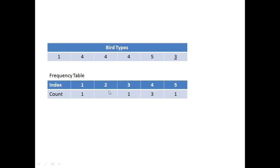Bird types 1, 3, and 5 are each occurring only once, and there is no occurrence of bird type 2. So we print the output as 4. Type 4 is occurring the most — three times.